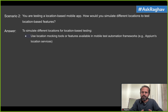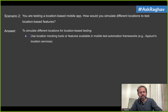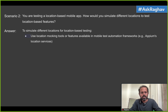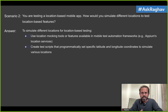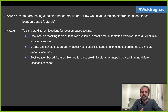The first thing is to make use of location mocking tools or features available in your platform or framework. For example, if you are using APM, use APM's location services. Make sure the tool, platform, or framework you use for mobile testing has options for mocking the location. When you create the scripts, make sure you have the option to set the location programmatically — like latitude and longitude — so your app can function accordingly. There are also location-based features like geofencing, proximity alerts, and mapping by configuring different location services.